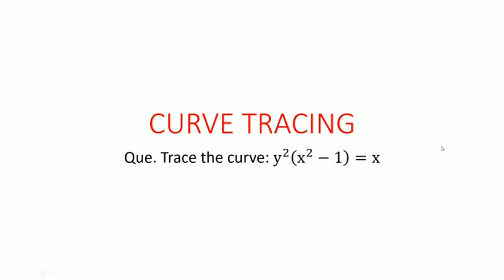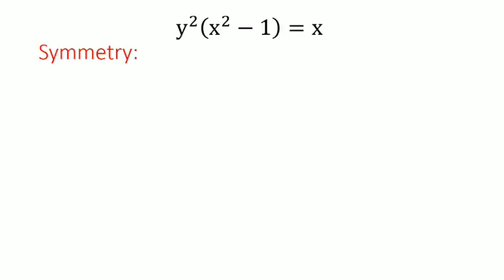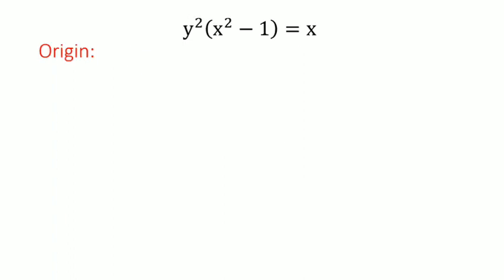In this video lecture, we will trace one Cartesian curve y² (x² - 1) = x. First, we will check symmetry. As all the powers of y are of even degree, the curve is symmetric about the x-axis. Next, since there is no independent constant term in the equation, the curve passes through the origin, that is (0, 0).